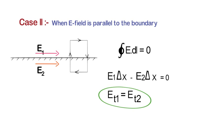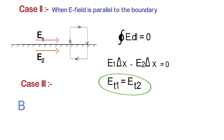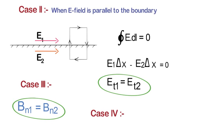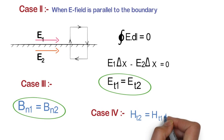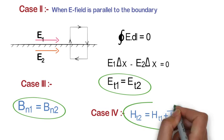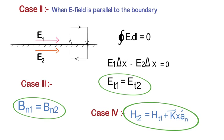The above two boundary conditions were for the electric field; the next two are for the magnetic field. The third boundary condition is BN1 equal to BN2, meaning the normal component of magnetic flux density is always continuous. The fourth boundary condition is HT2 equal to HT1 plus K cross AN, where K is a vector quantity representing the current per unit length. If current per unit length equals zero, then HT2 equals HT1.